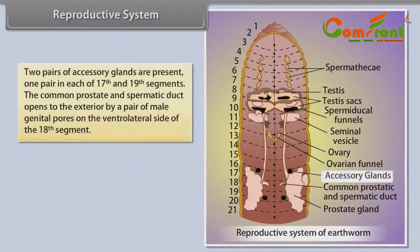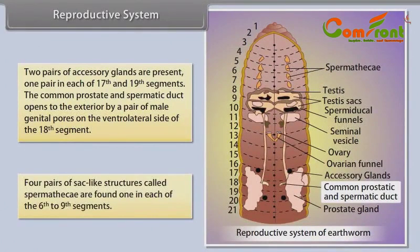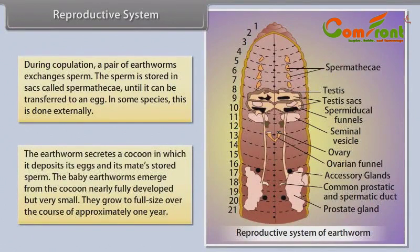Two pairs of accessory glands are present, one pair each in the 17th and 19th segments. The common prostate and spermatic duct opens to the exterior by a pair of male genital pores on the ventrolateral side of the 18th segment. Four pairs of sac-like spermathecae are found one in each of the 6th to 9th segments. During copulation, a pair of earthworms exchanges sperm, which is stored in spermathecae. The earthworm secretes a cocoon in which it deposits its eggs and stored sperm. Baby earthworms emerge from the cocoon nearly fully developed but very small.